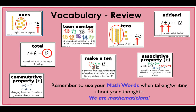Our 'addends' are the two numbers being added — in 7 plus 5, seven and five are the addends. The 'total' is the number found as a result of adding: 4 plus 8 equals 12, so 12 is the total — we also call that the sum. 'Make a 10' is the strategy that combines numbers that add to 10 when finding totals greater than 10. For 7 plus 5 equals 12, some of us find it easier to break the 5 into 3 plus 2, since 7 plus 3 is 10, and then 10 plus 2 equals 12.